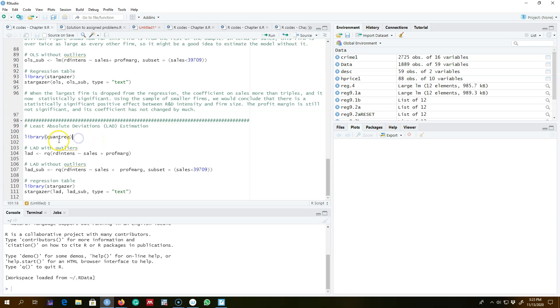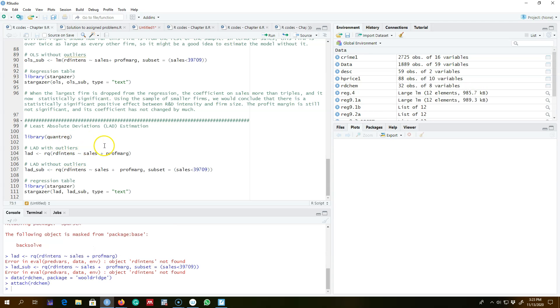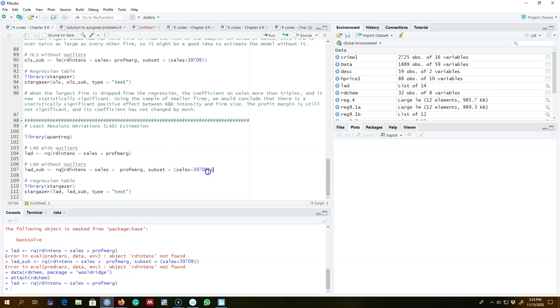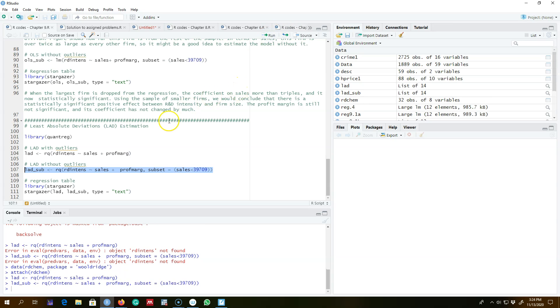To apply this least absolute deviation method we need this library quantreg. So let's regress this model with outliers and then subset to exclude any outlier. We know that there was one outlier, so I'm going to exclude it, and now let's look at the results.